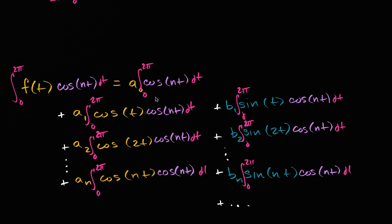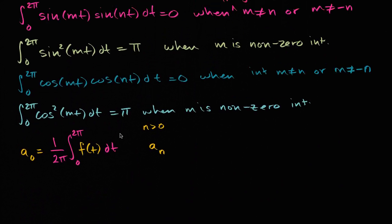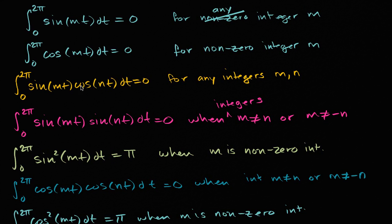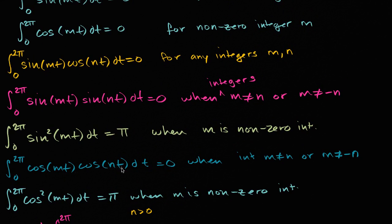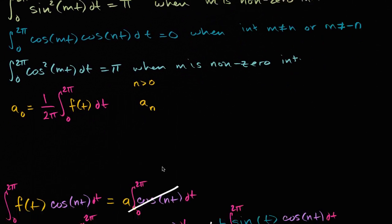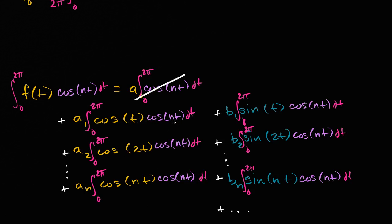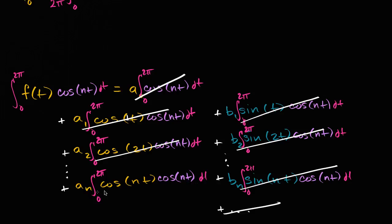Now, what does each term evaluate to? We know that the definite integral from zero to two pi of cosine(nt), where n is a non-zero integer, is zero — so that first term is zero. We also know that the integral of cosine(nt)·sine(mt) for any integers m, n over zero to two pi is zero. And we know that the integral of cosine(mt)·cosine(nt) where m does not equal n is also zero. So everything ends up being zero, except for one term.